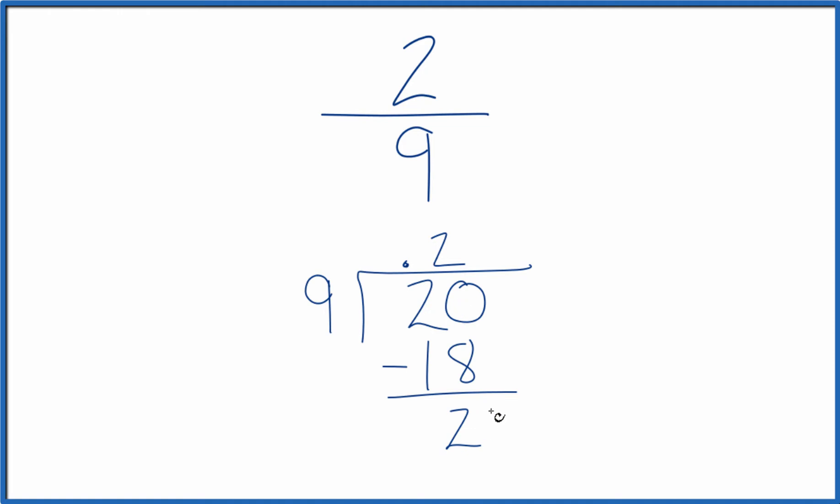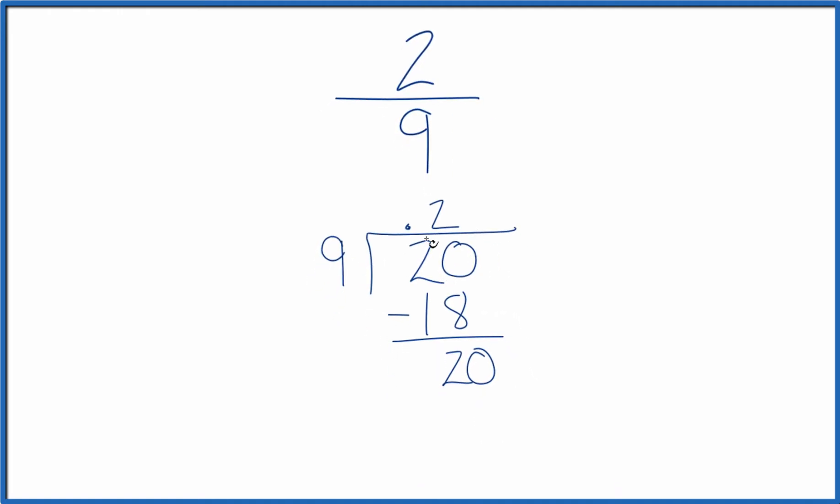So it doesn't go into 2. We're going to make this 20, move over 1, and 2 times 9 is 18. We subtract, we get 2. And that's just going to keep happening. This 2, it's just going to keep repeating like this. It won't stop.